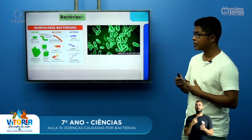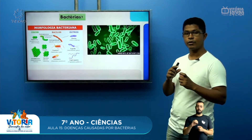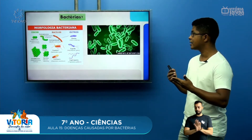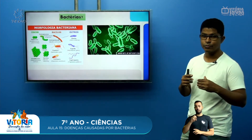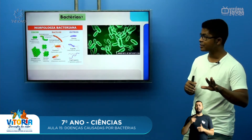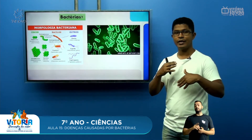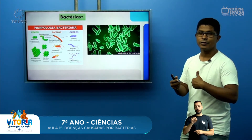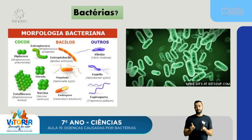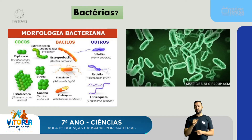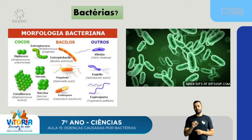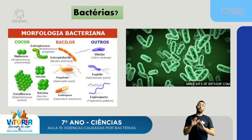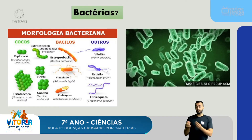As bactérias possuem diversas formas. Temos bactérias em forma de cocos, que são pequenas bolinhas, chamadas de diplococos; um tipo chamado de estreptococos. Temos também estafilococos, espiroquetas, bacilos, sarcinas, endósporos e flagelados — diversos nomes diferentes para esses tipos de bactérias. Tudo vem do tipo de forma que elas possuem.